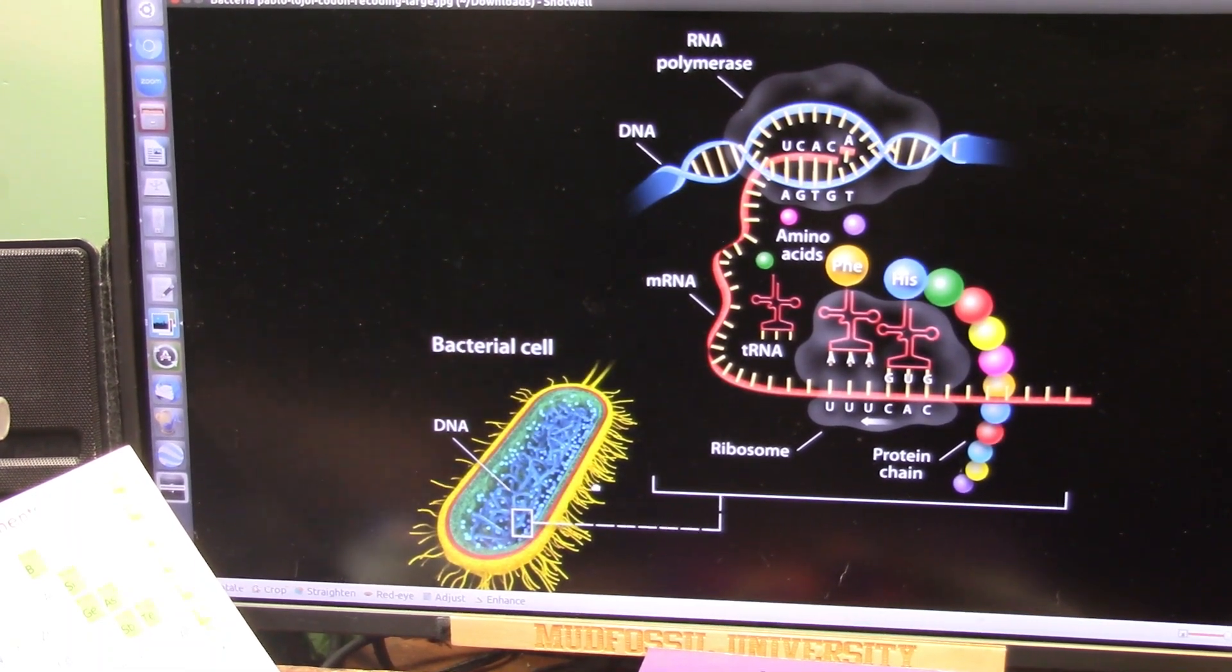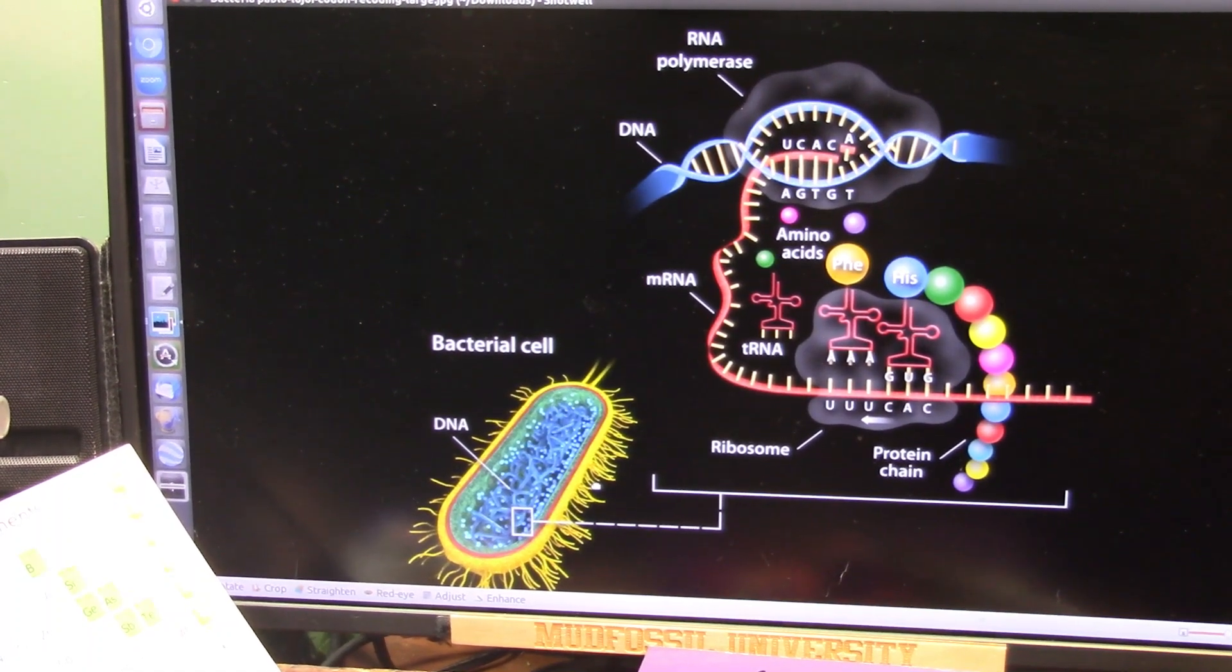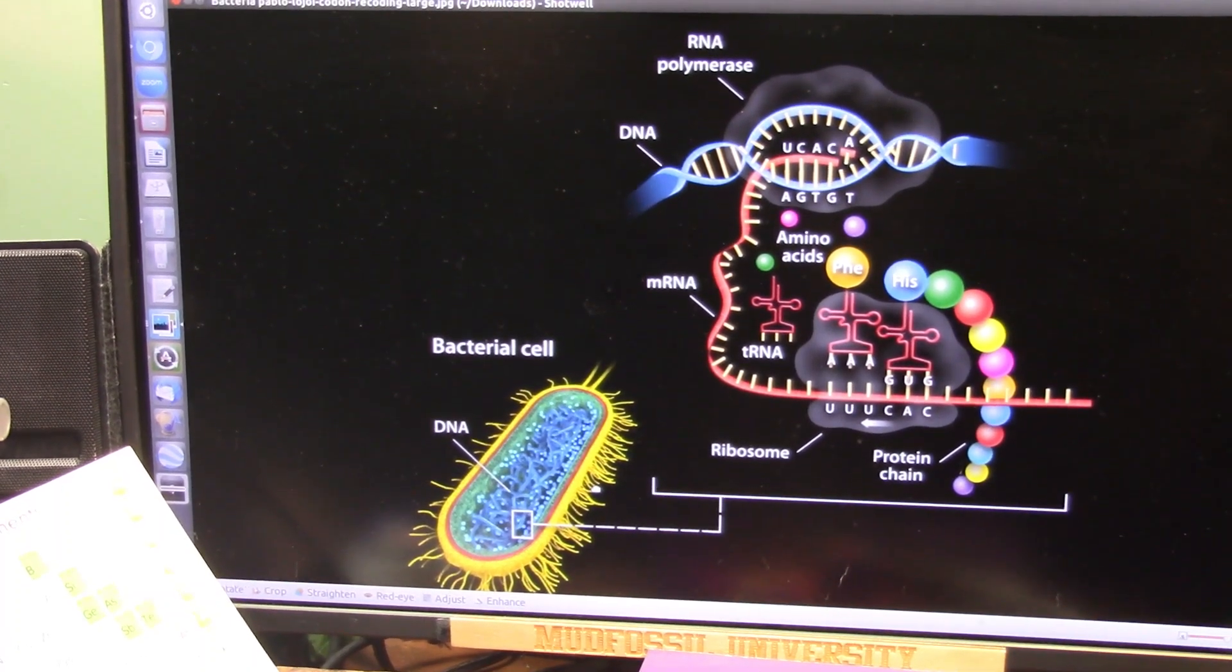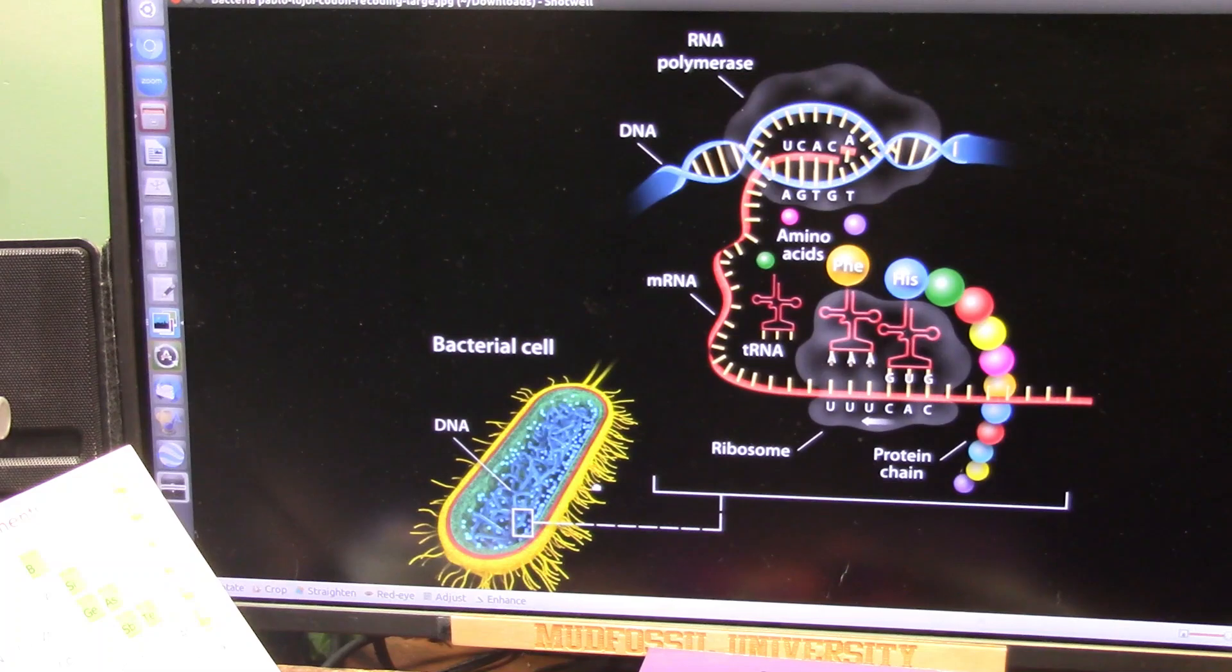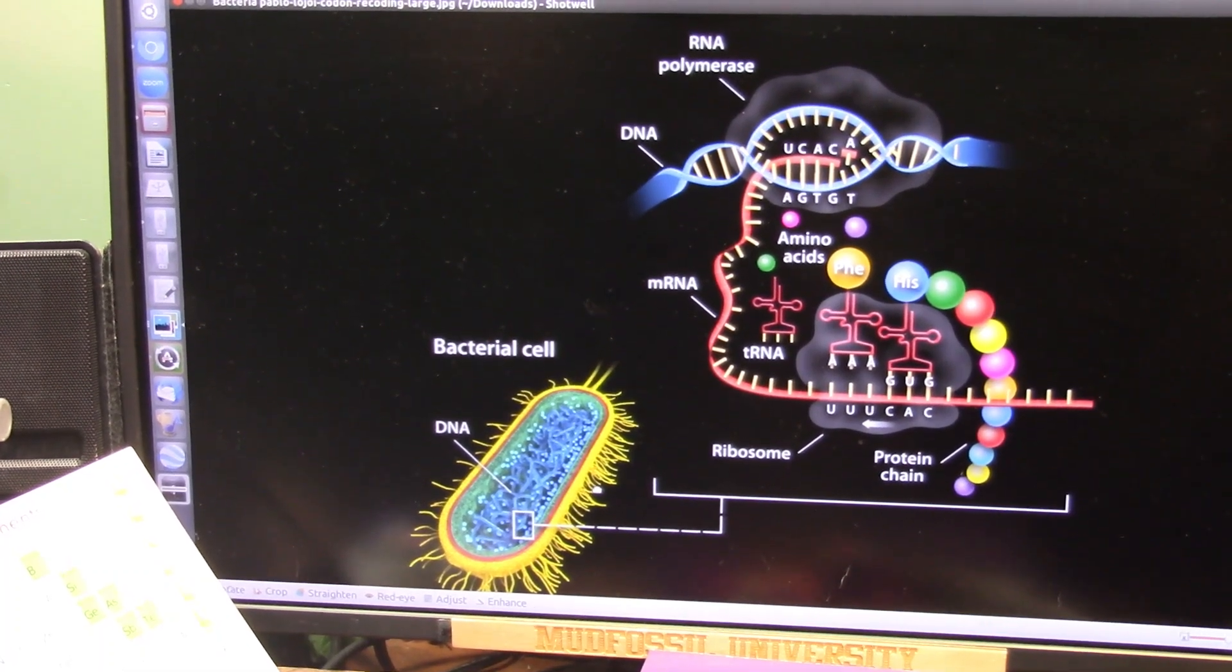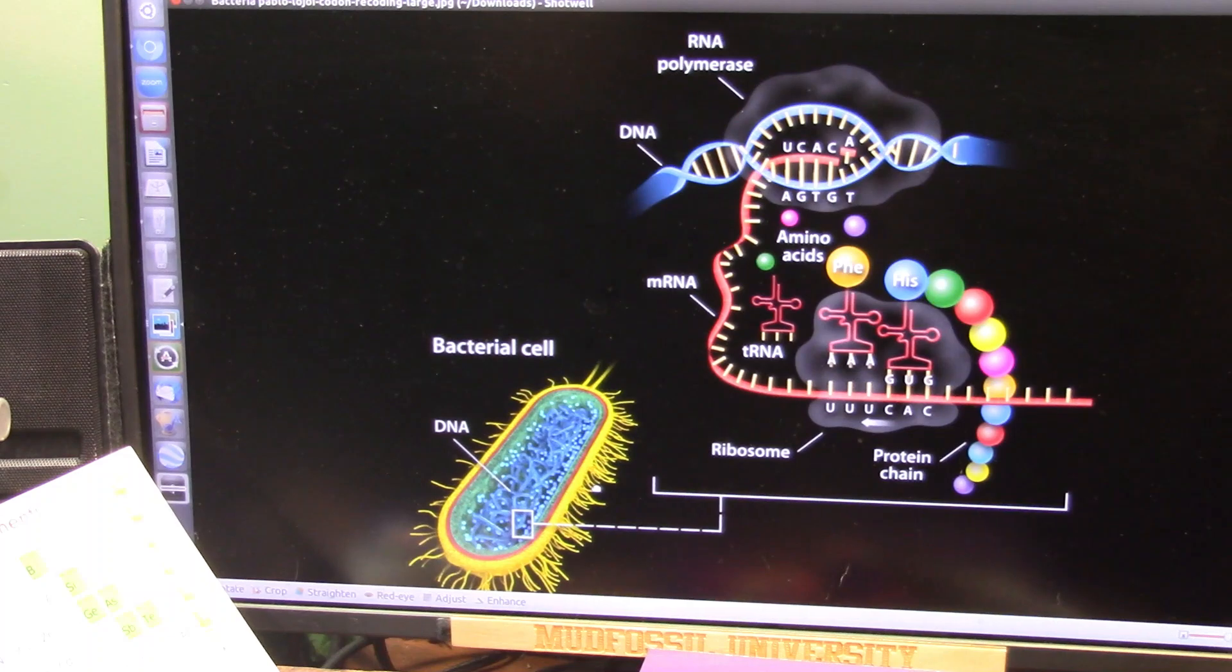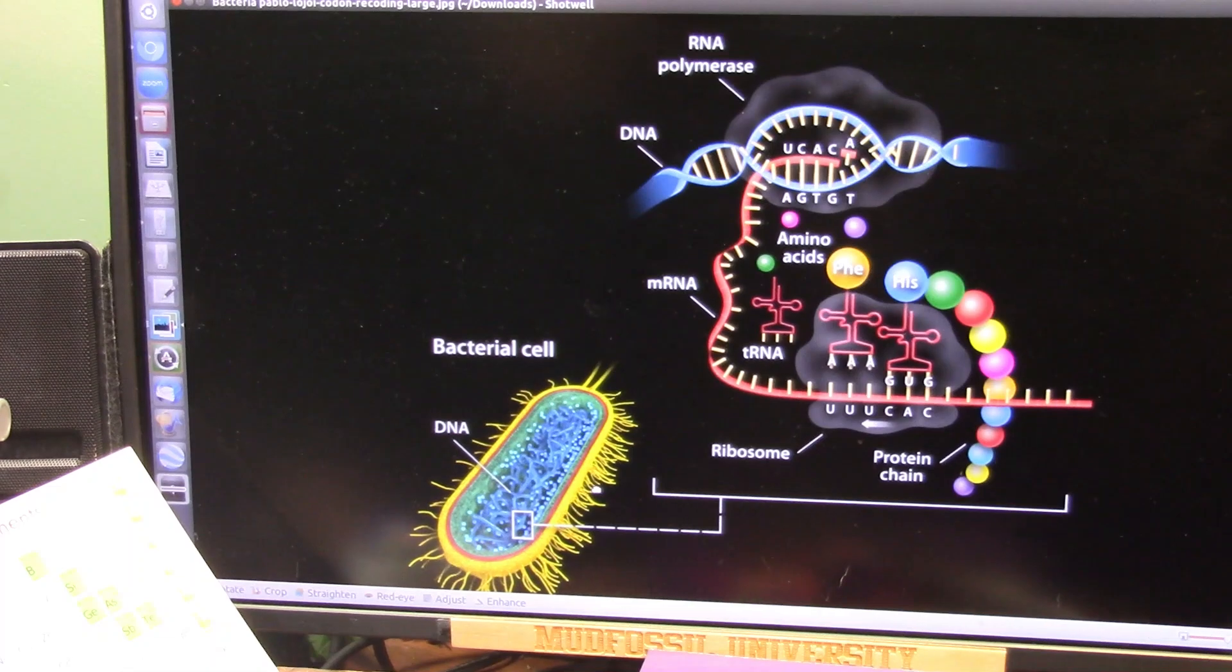DNA is too evolved to have just happened by accident. There's some master programmer, they call him God. And I believe, you know, everybody says, oh, you talk about this and you're taking God out of the equation. Absolutely not. I'm putting God in the equation, and I'm putting God's son, Jesus Christ, at the top of the equation.